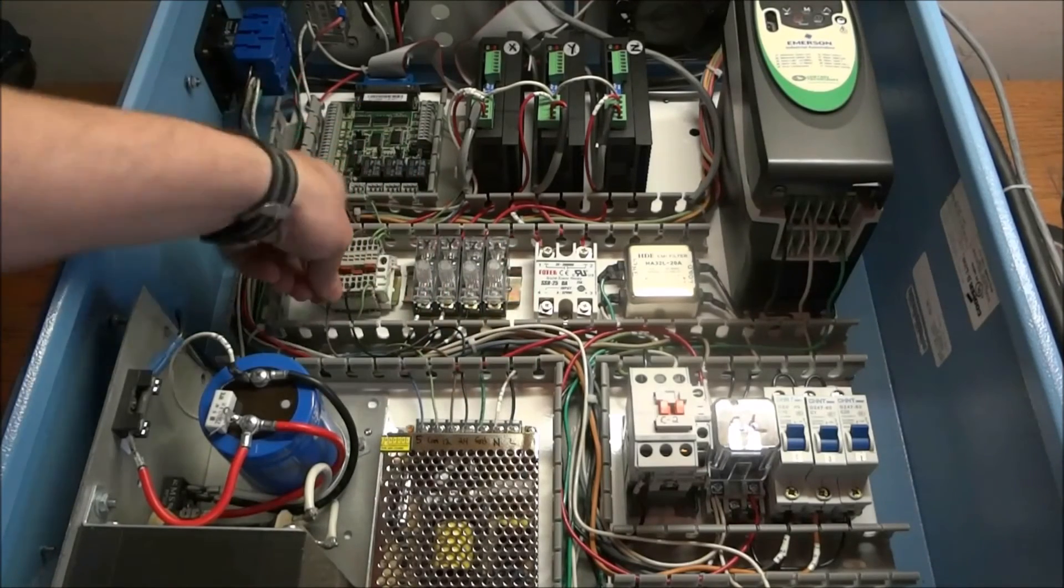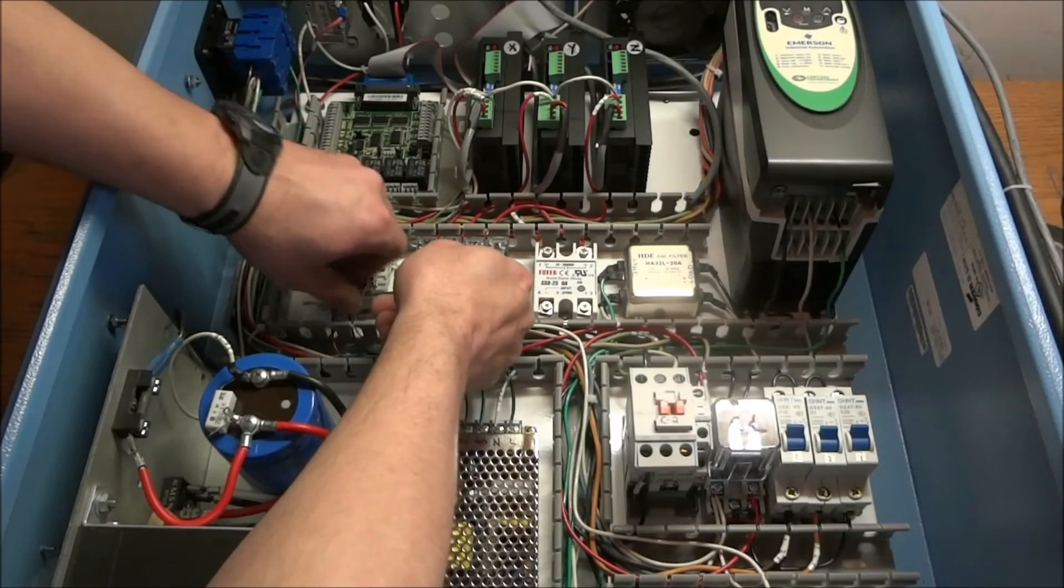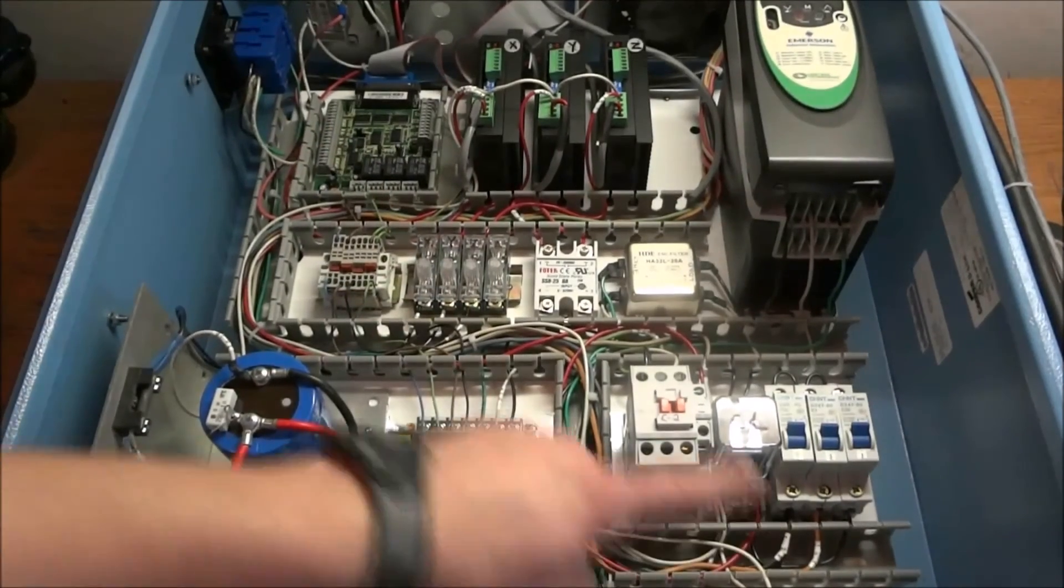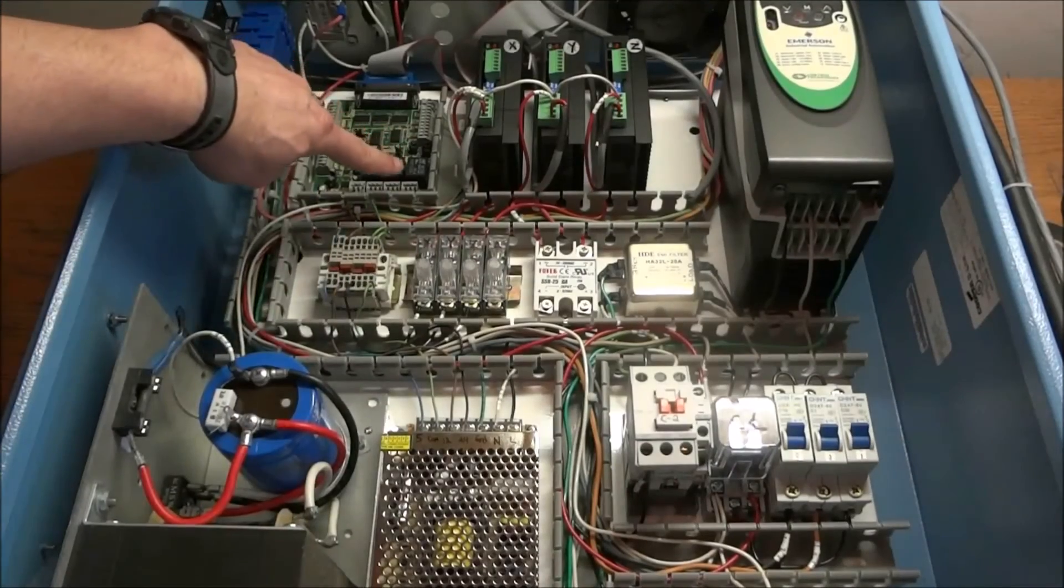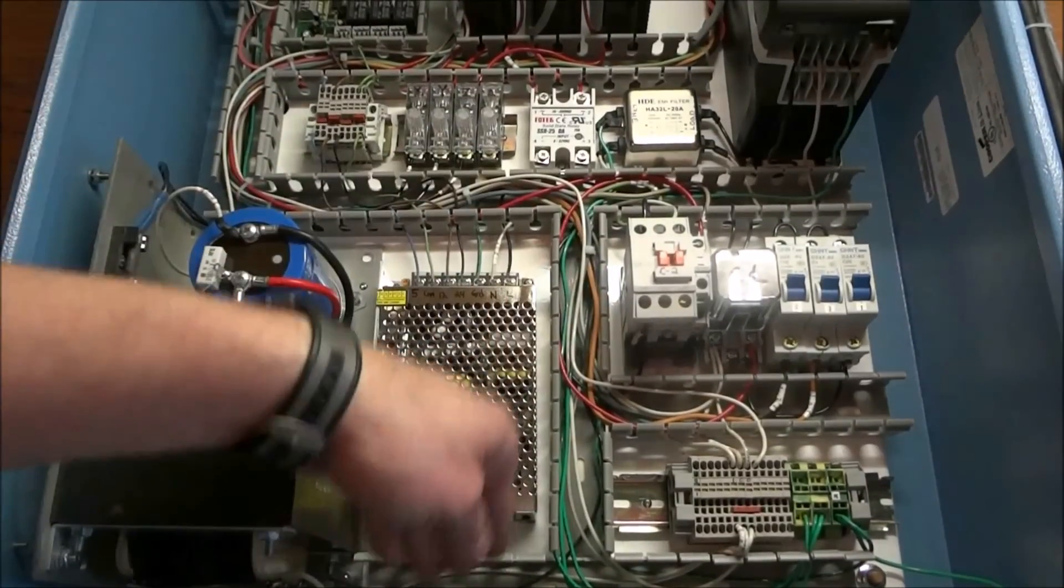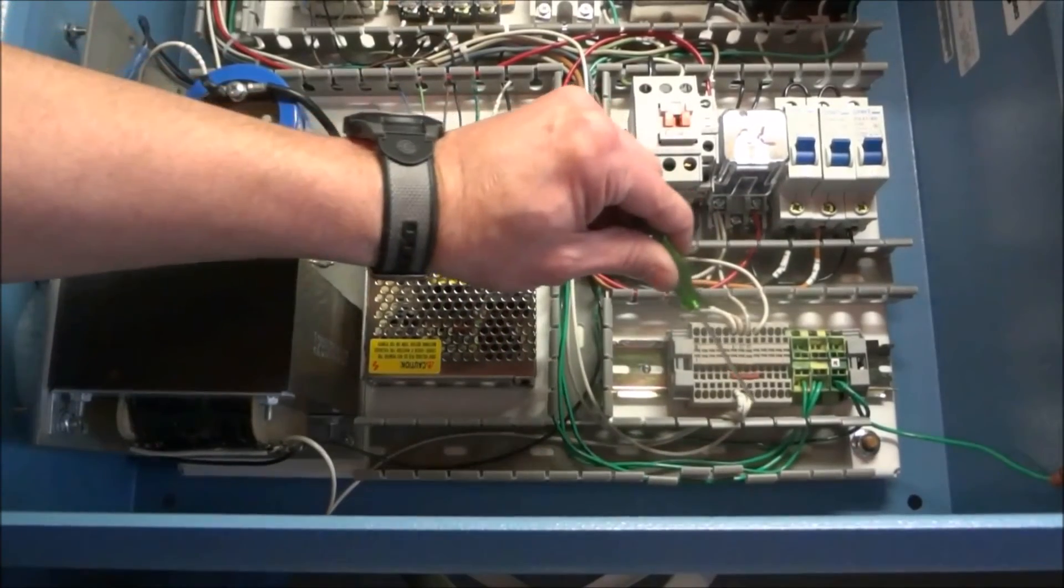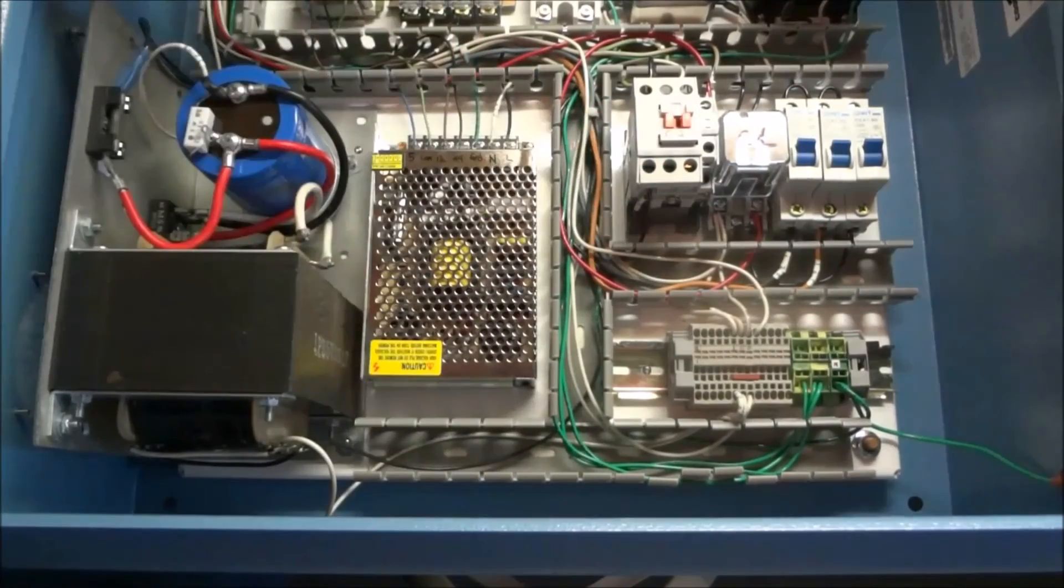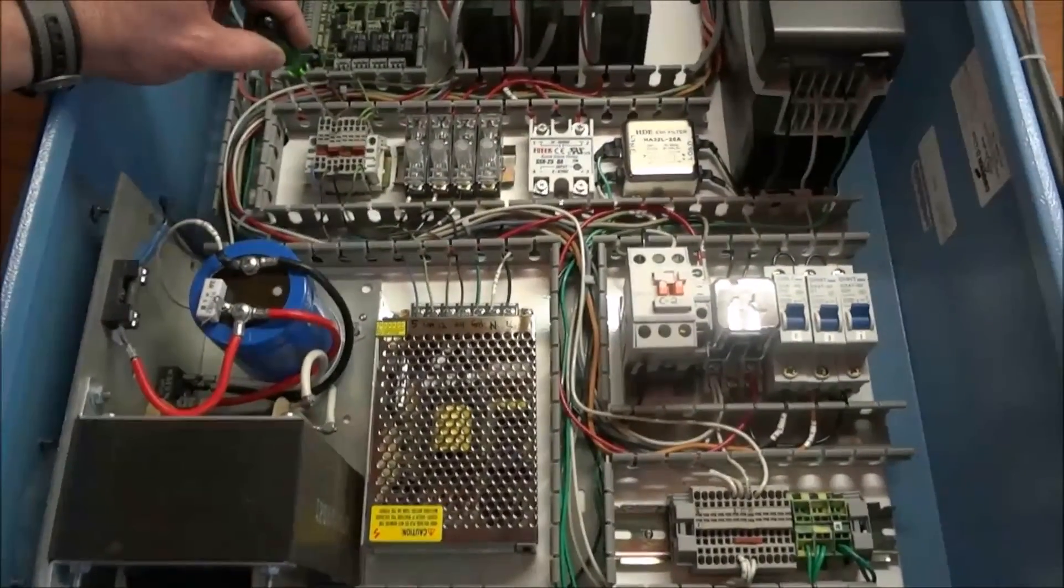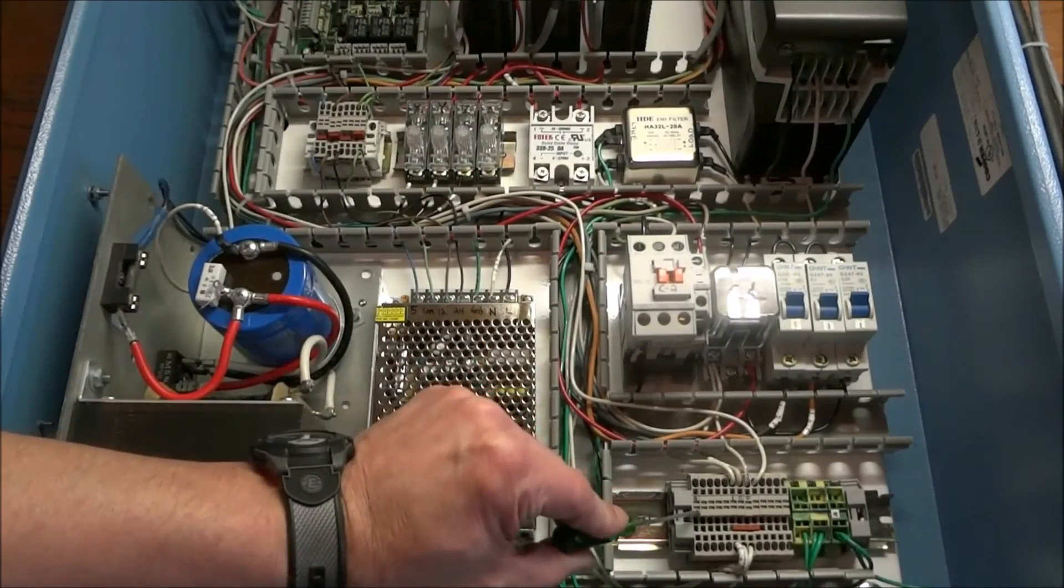You can see how much cleaner it makes it by landing them on this terminal strip rather than run them down to here and then back up over to here. Now I could have taken and flipped this around so the wires could come out the bottom here and come to my terminal strip. However I thought just having the secondary terminal strip might be the cleaner way to go. And then that way it keeps the low voltage separated from the 110 volts.